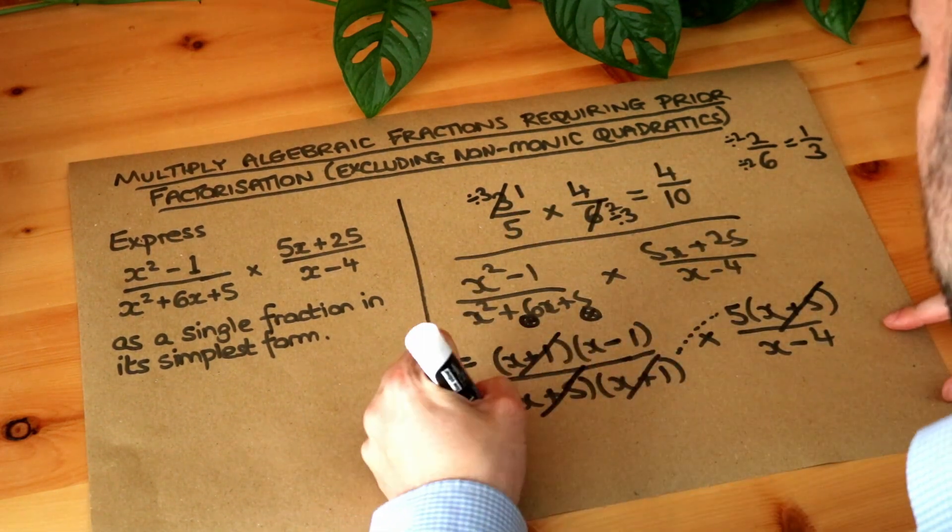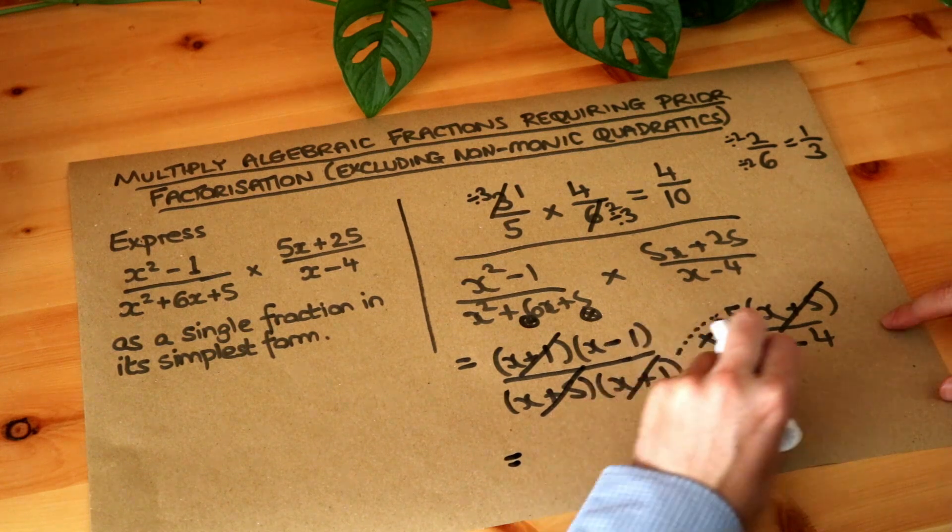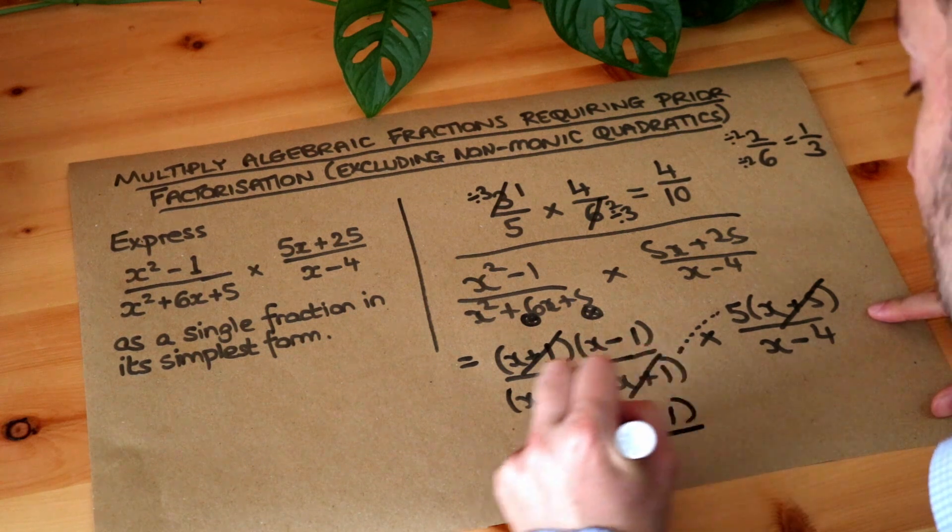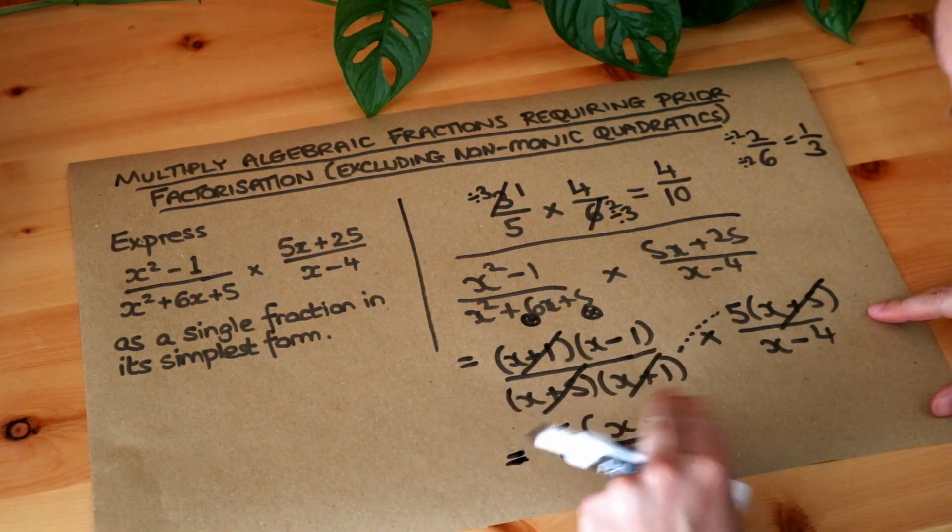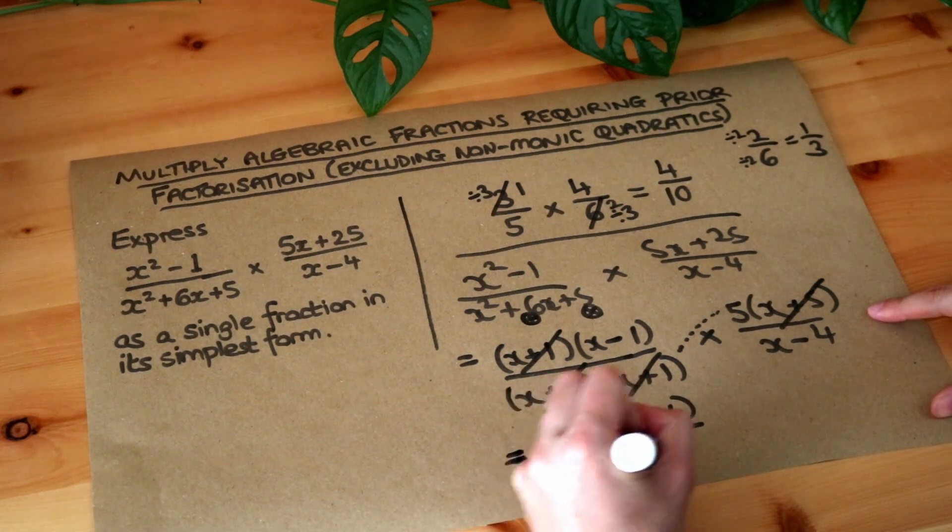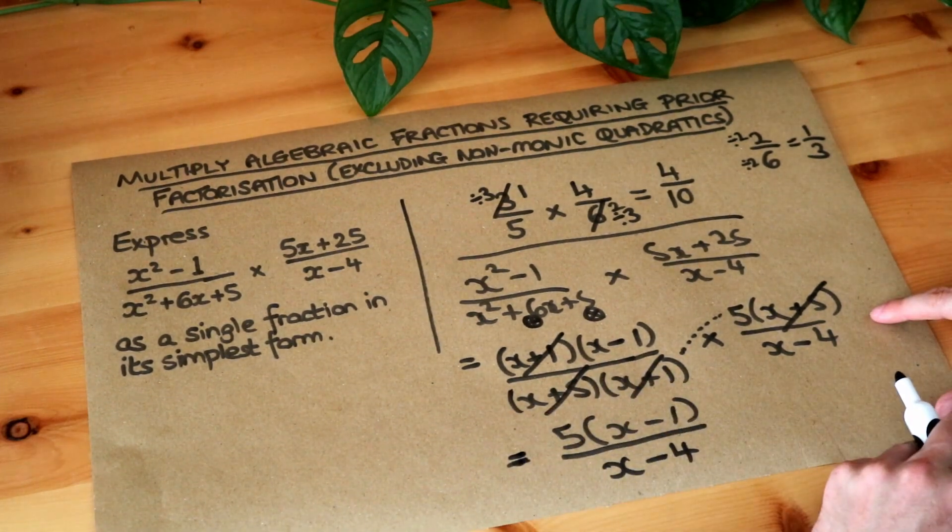And then all I'm left with now is we've got x minus 1 times 5. So I'm just going to put 5 brackets x minus 1. You could expand it, but I'm not going to bother. It's fine like that. And all we've got left at the bottom is x minus 4. So we have x minus 4. And that is the final answer.